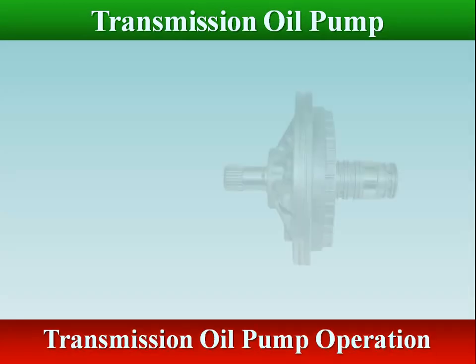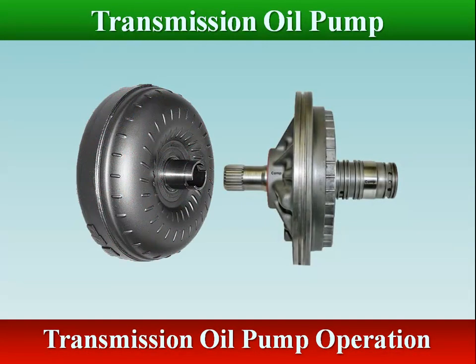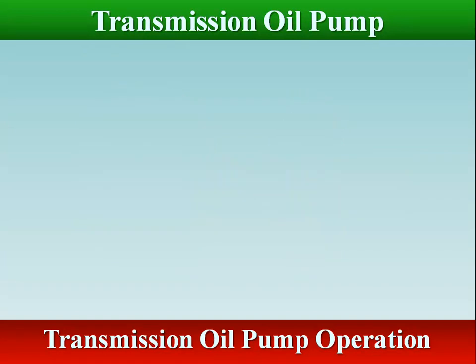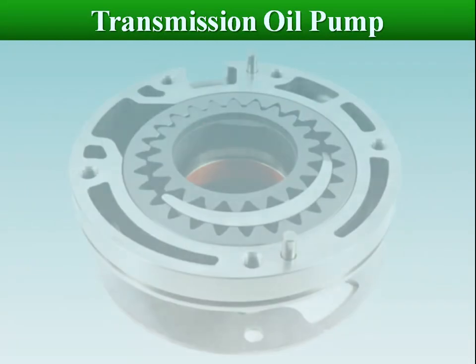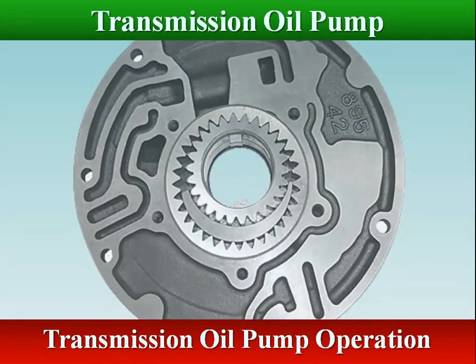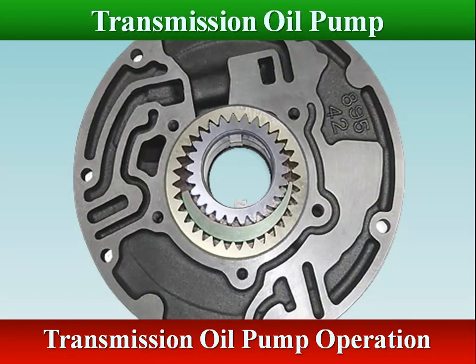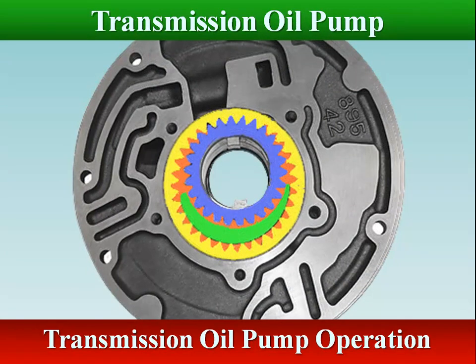The oil pump is driven by the torque converter. The center drive gear is driven by the torque converter drive hub. The external teeth of the drive gear mesh with the internal teeth of the driven gear, causing it to rotate in the same direction. Located between the two gears is the crescent, which separates the inlet of the pump from the outlet.